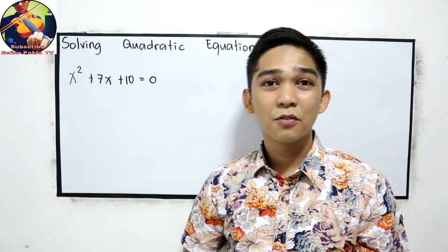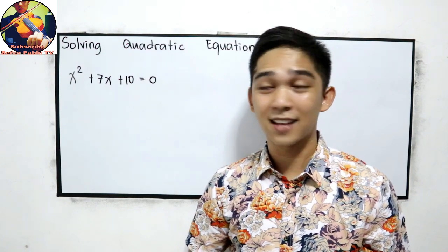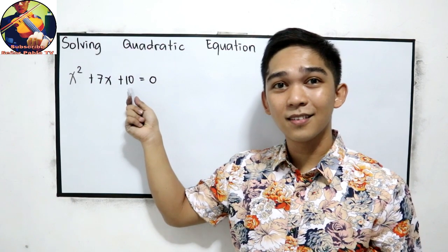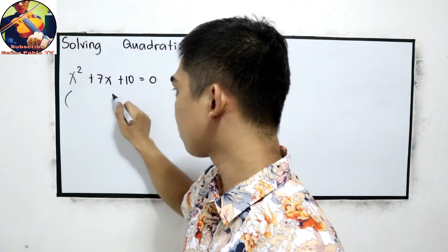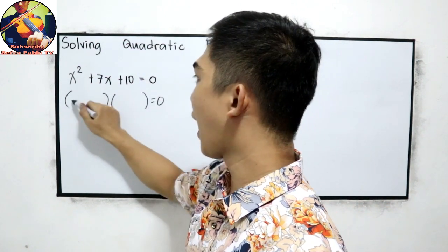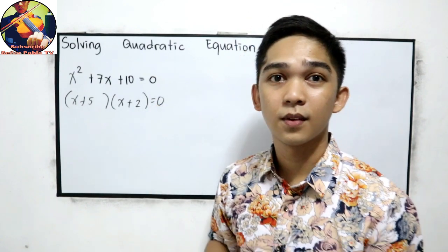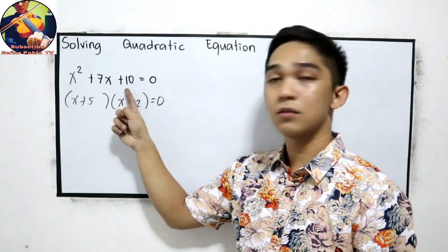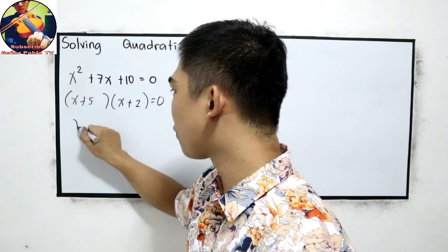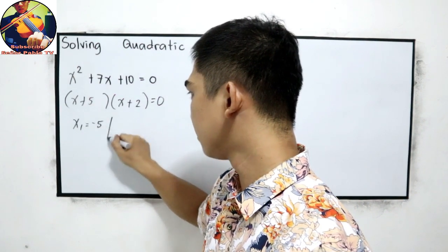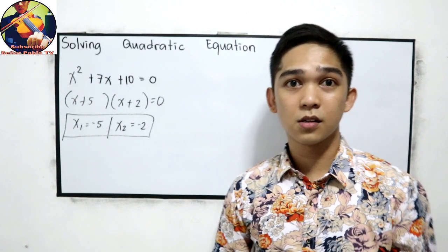How about factoring in the form x squared plus bx plus c equals 0? We can use that. Factors of 10 whose sum must equal 7: that is x plus 5, x plus 2. 5 times 2 is 10, and 5 plus 2 is 7. So x sub 1 equals negative 5 and x sub 2 equals negative 2. These will be the values for x.